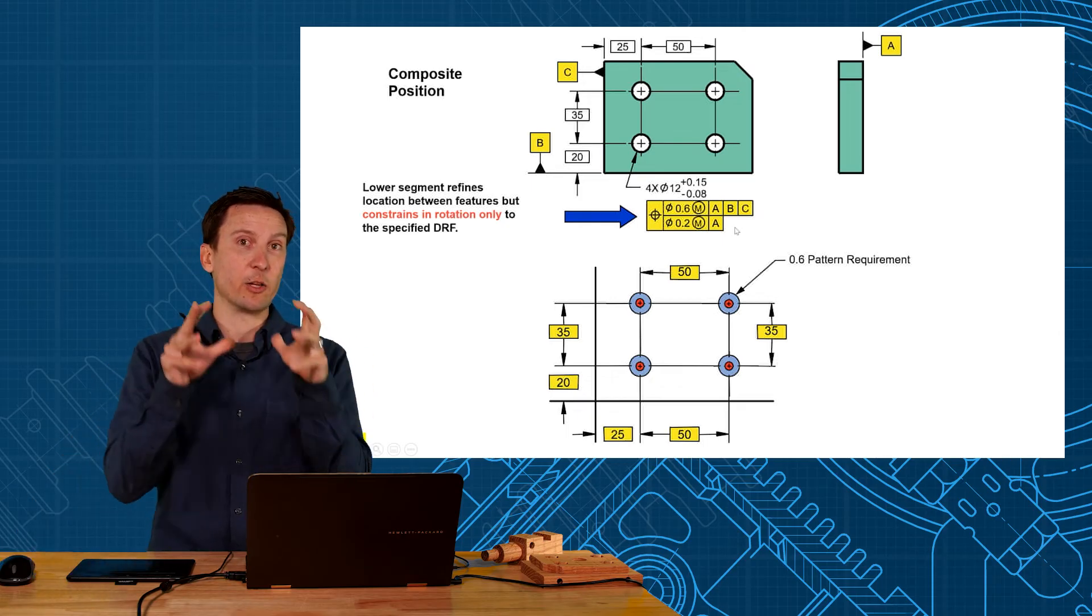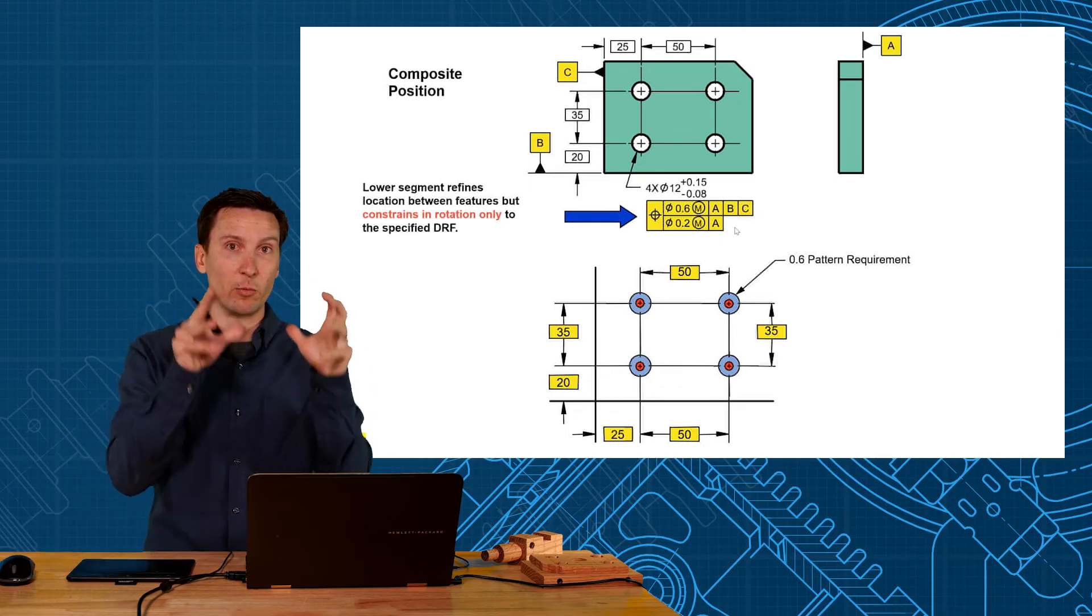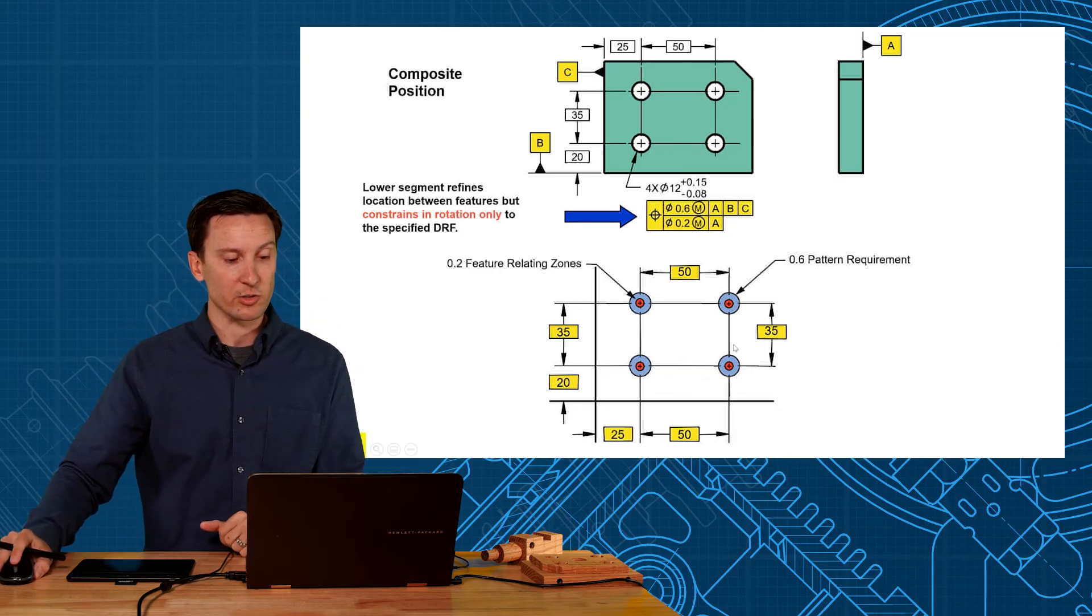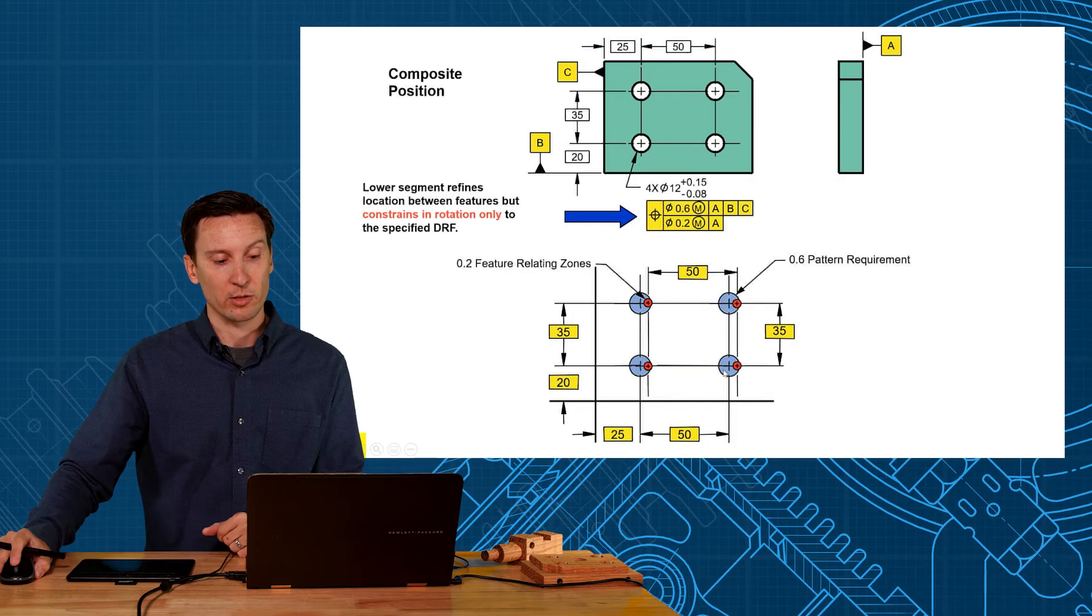Which means they're unlocked in the translational degrees of freedom X and Y and rotation like this. So these tolerance zones can float to the left, to the right, down, up,